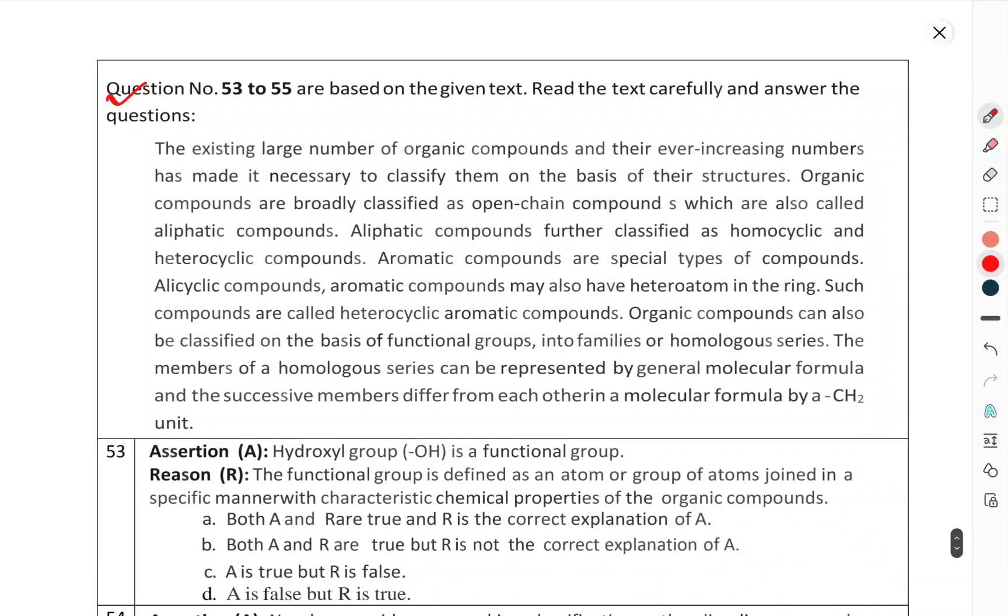The existing large number of organic compounds and their ever-increasing number has made it necessary to classify them on the basis of their structure. Organic compounds are broadly classified as open chain compounds, also called aliphatic compounds. Aliphatic compounds are further classified. The homocyclic and heterocyclic compounds. Aromatic compounds are a special type of compounds.